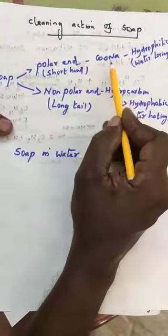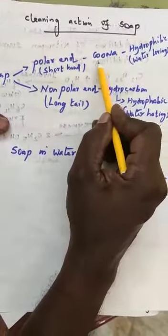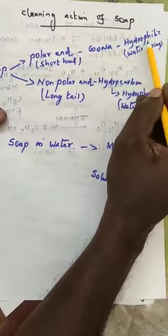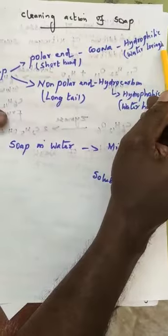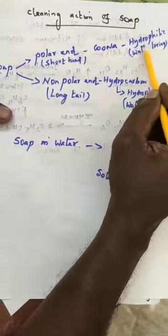The polar end having the group, carboxylate group, COONA, it is hydrophilic in nature. That is, water loving group. It is attracted towards water. It is hydrophilic group,